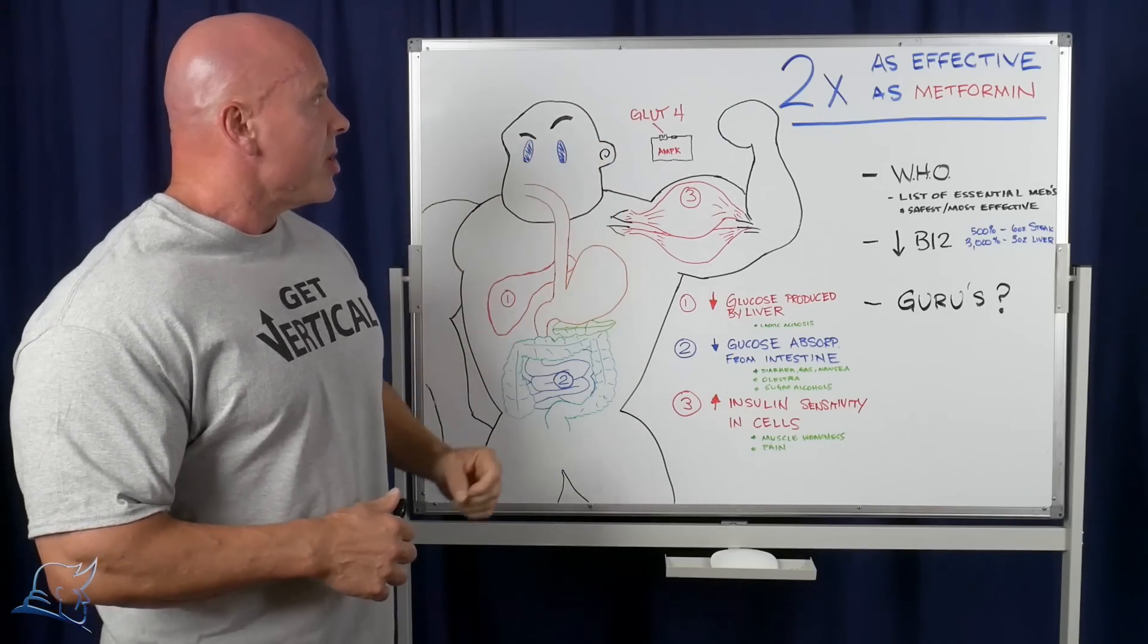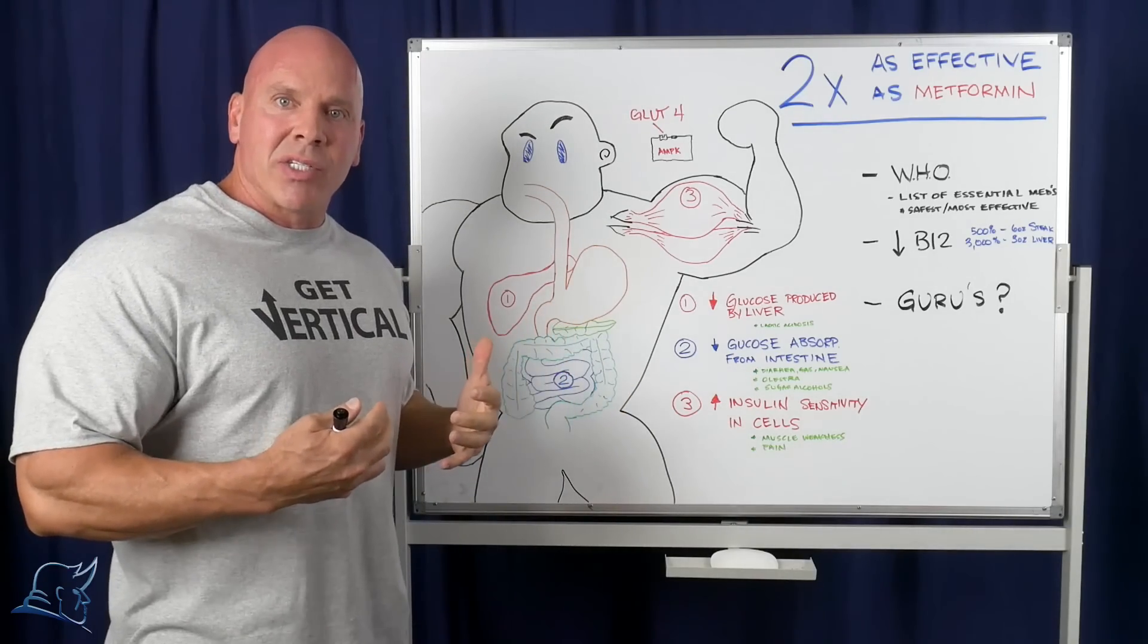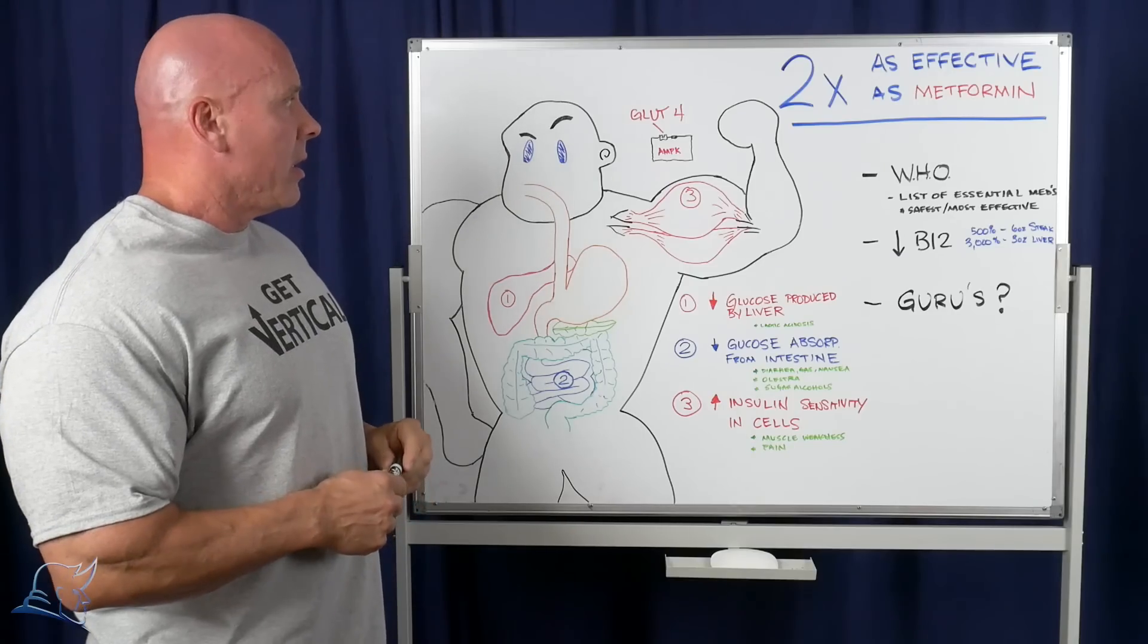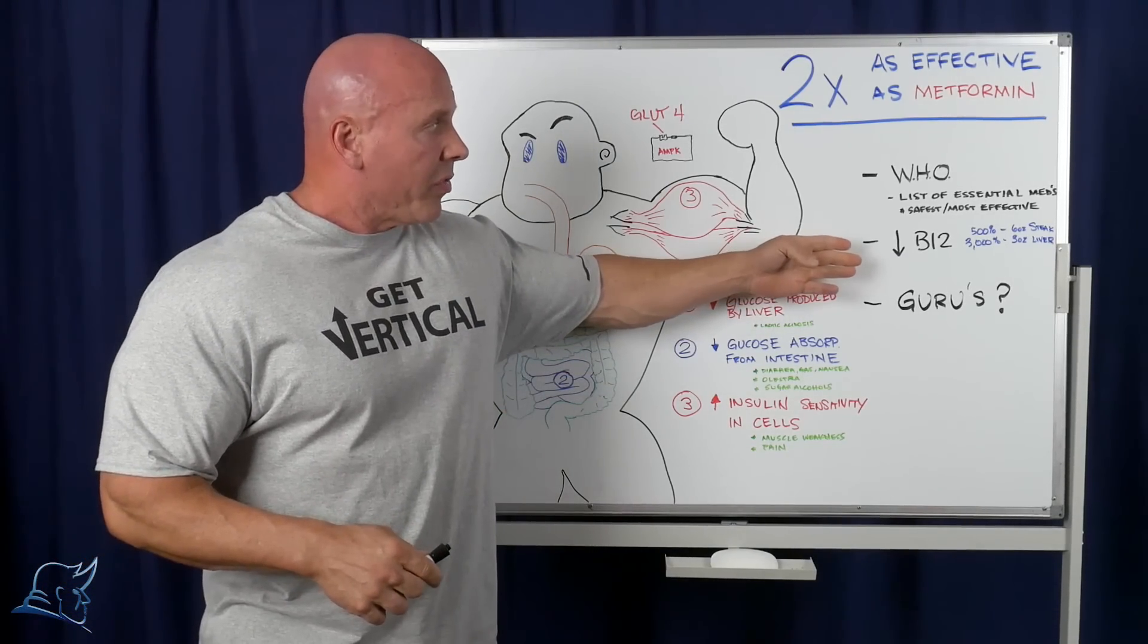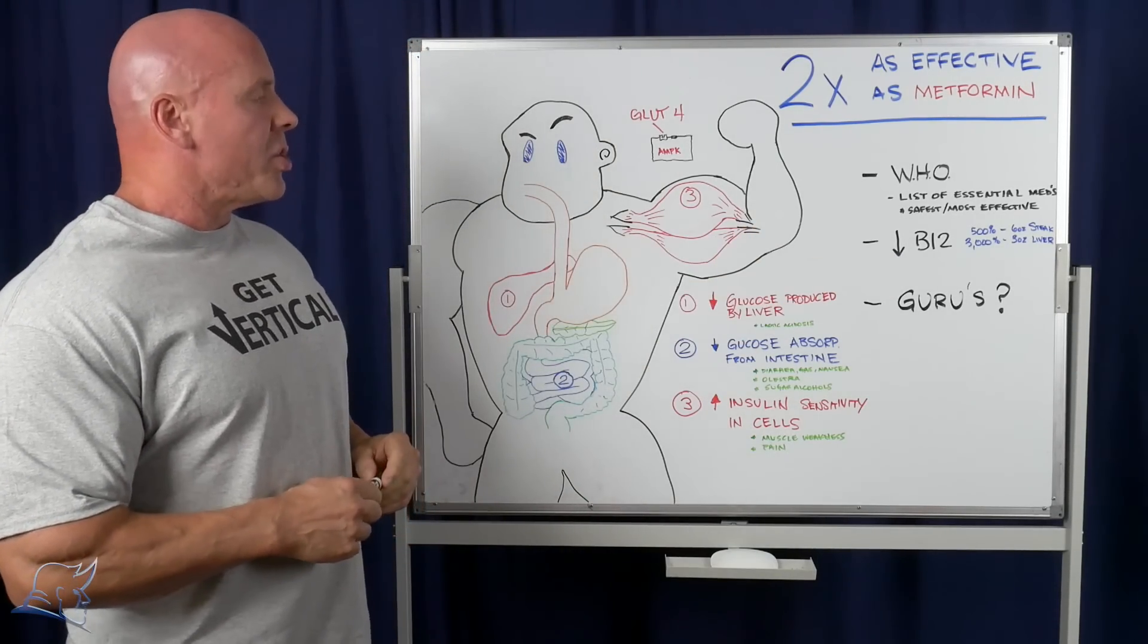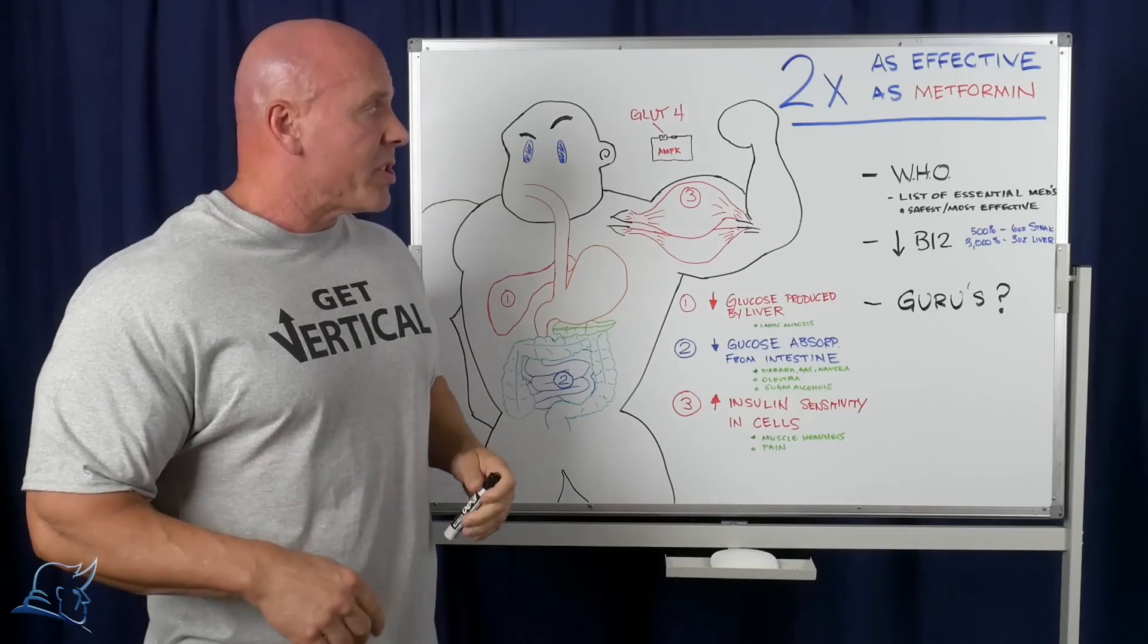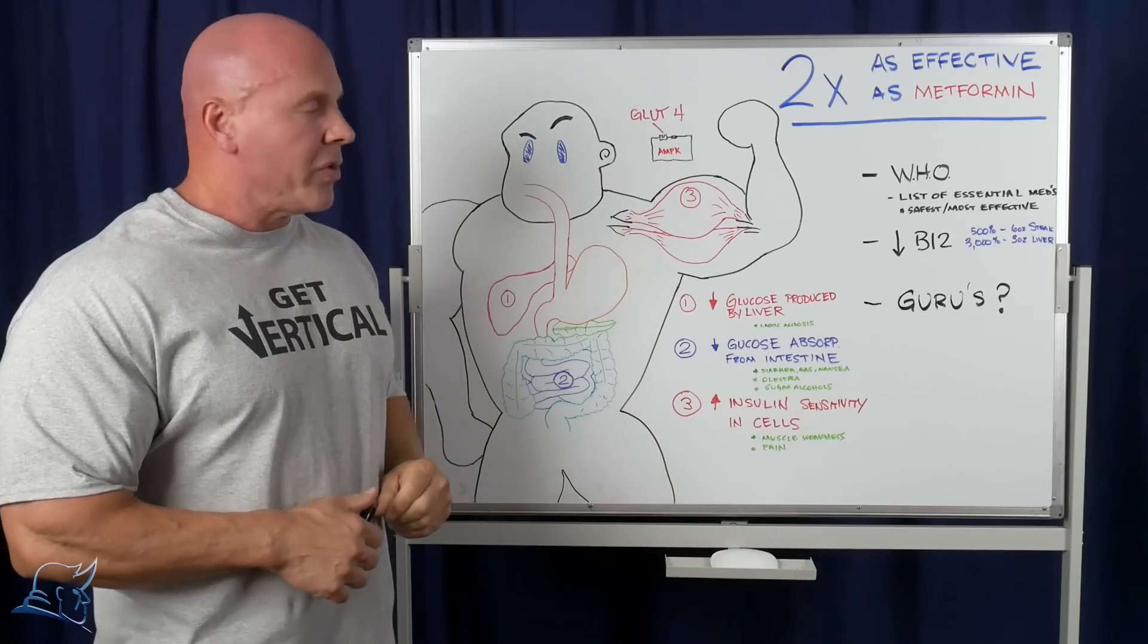So it can take in glucose directly from the bloodstream without the need of insulin. So it's effective in that way. It also decreases B12. And so one of the good ways that you can compensate for that is using, say, six ounces of steak has 500% of your daily B12, or three ounces of liver has 3,000% of your daily B12.